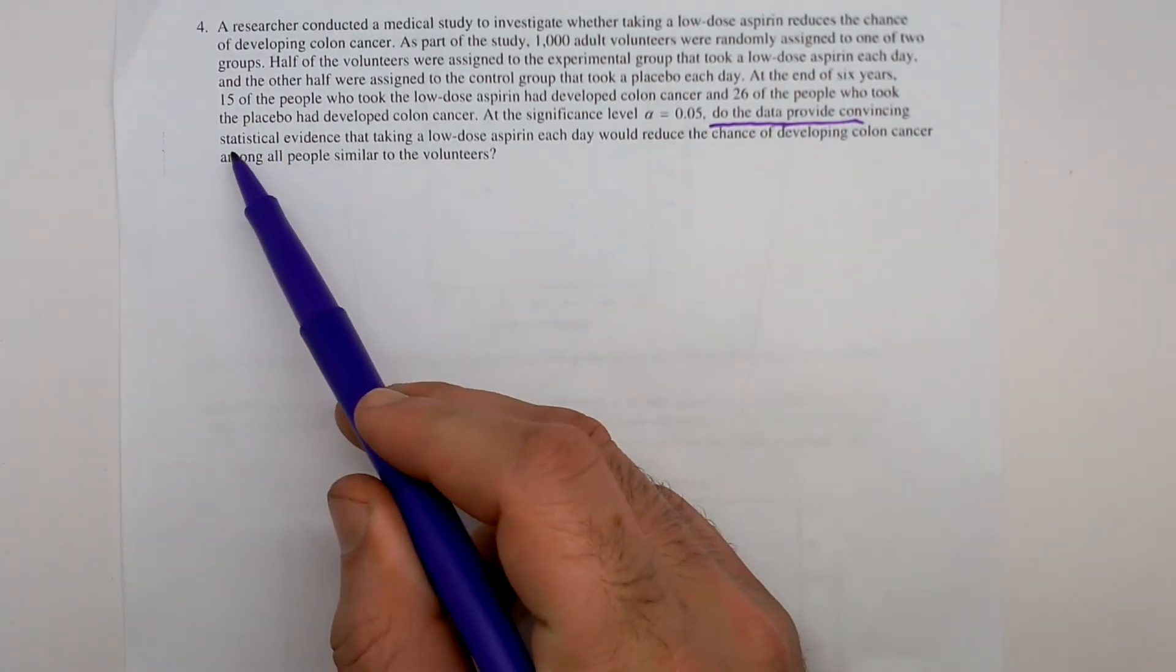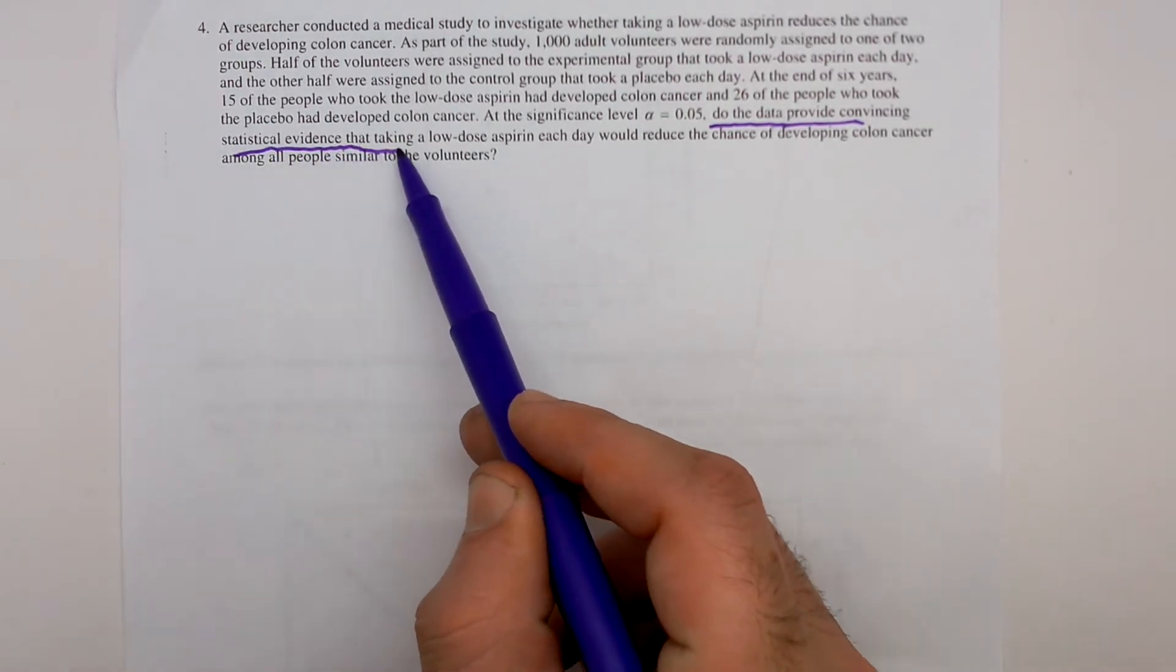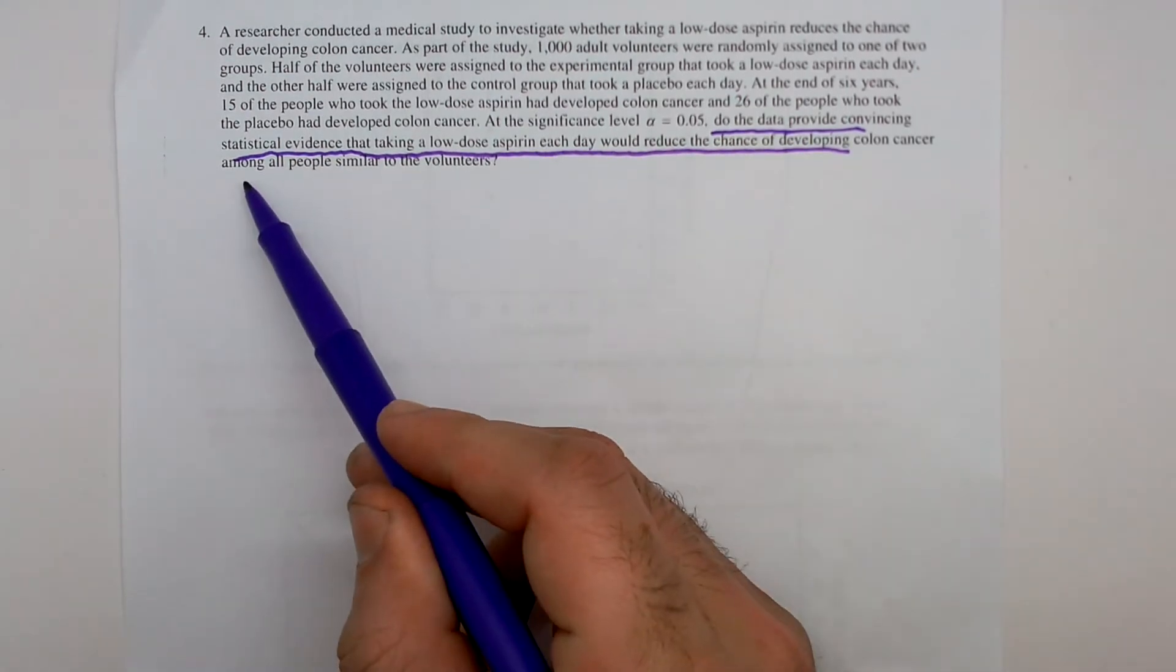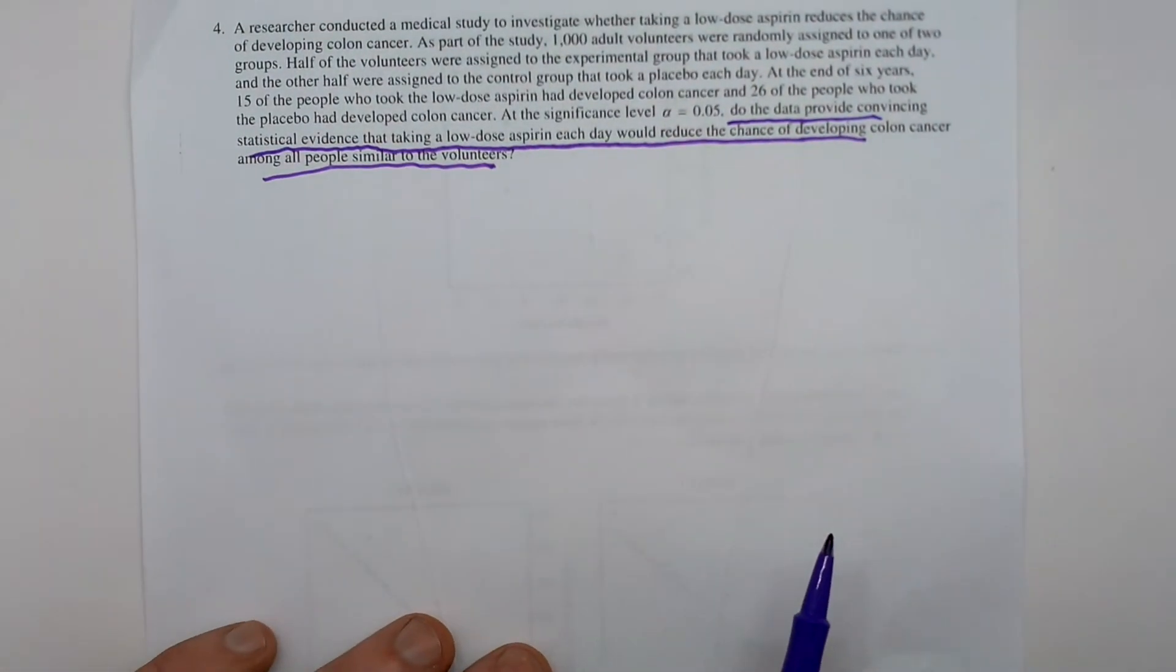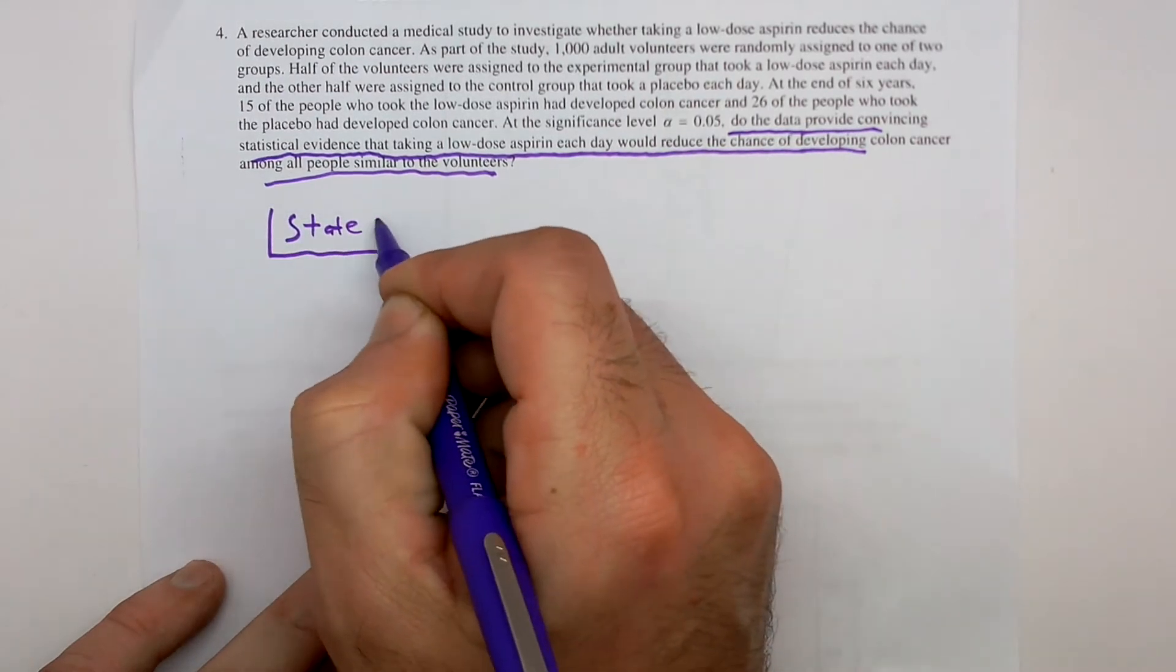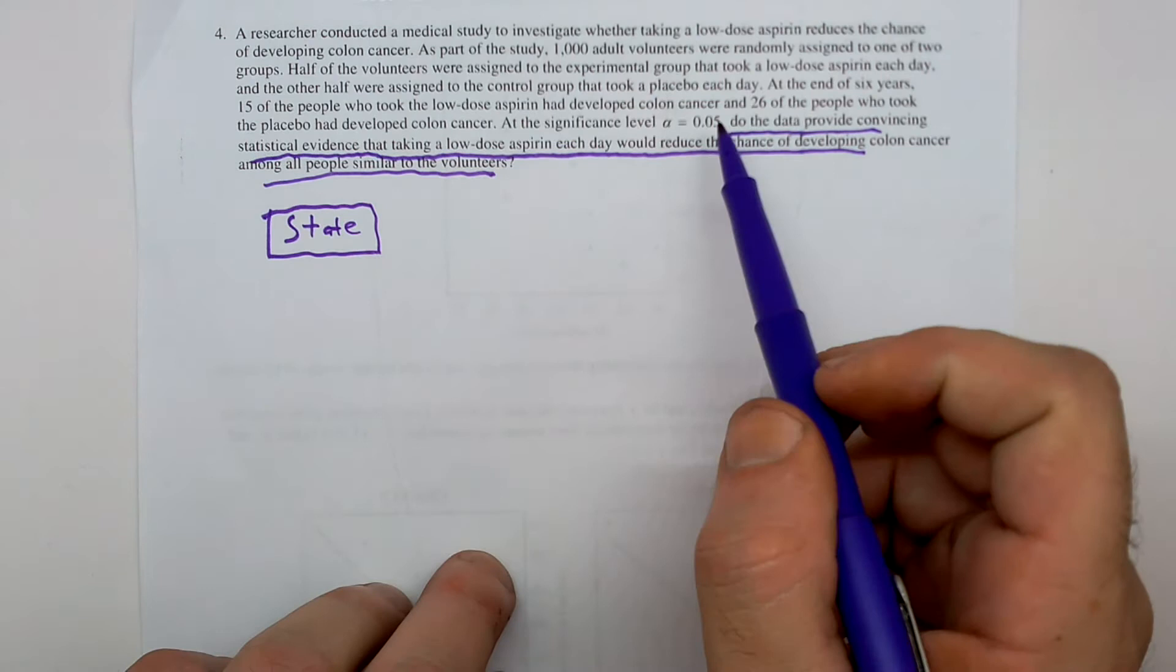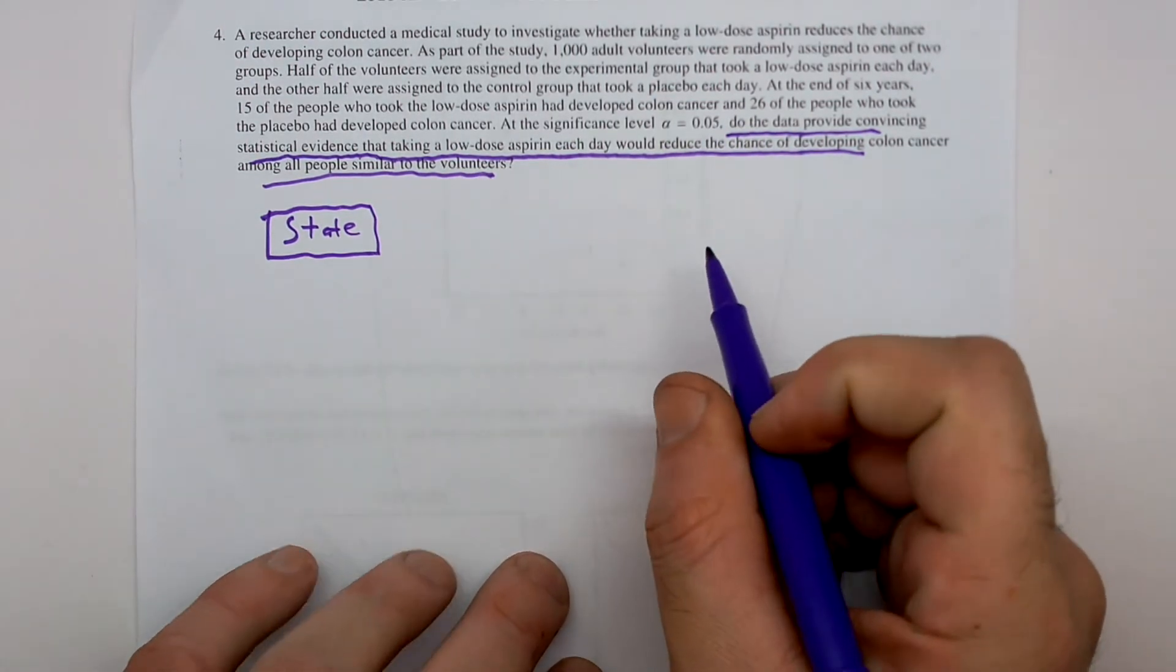The data provide convincing statistical evidence that the low-dose aspirin would reduce the chance of developing colon cancer. All right, we're going to use our inference toolbox. That is our state, plan, do, conclude outline. In the state, we're going to state our hypotheses, our alpha significance level, and define our variables.